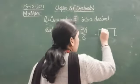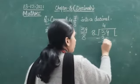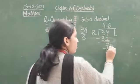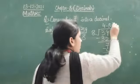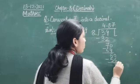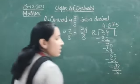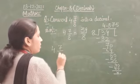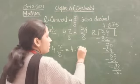Do the division. 8 fours are 32, plus 7 is 39. 8 eights are 64 — remainder 6. 8 sevens are 56 — remainder 4. 8 fives are 40. So, the decimal representation of 4 and 7 by 8. Therefore, 4 and 7 by 8 is equal to 4.875.